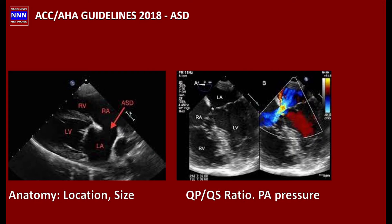Echocardiography is the hallmark for gathering all the information we need to decide on treatment. All patients need some medical treatment — rhythm control, rate control, symptom control — and we need to assess for cryptogenic stroke. Here is an echocardiogram in a modified four-chamber view showing a large defect in the atrial septum.